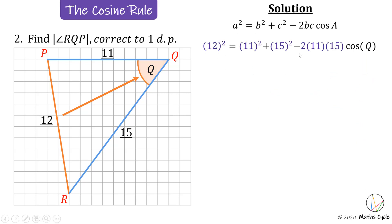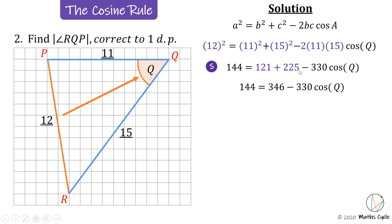Simplify: 12 squared is 144, 11 squared is 121, 15 squared is 225, and minus 2 times 11 times 15 is minus 330 times cosine Q. Add 121 and 225 together, leaving 144 equals 346 minus 330 times cosine Q. Now we need to solve for Q.